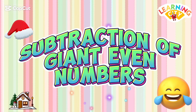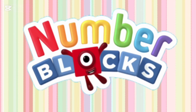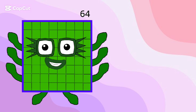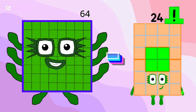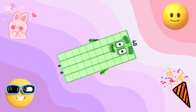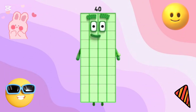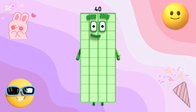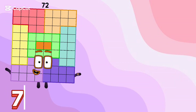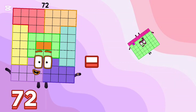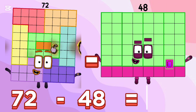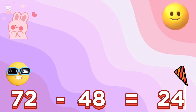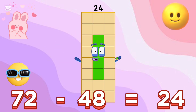Let's learn subtraction of giant even numbers using number blocks. 64 minus 24 is equals to 40. 72 minus 48 is equals to 24.